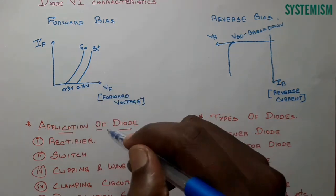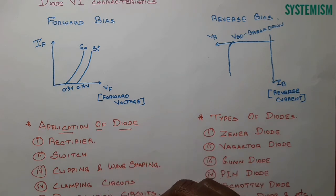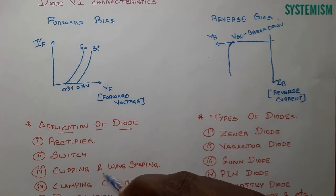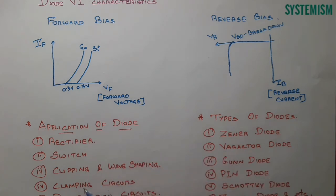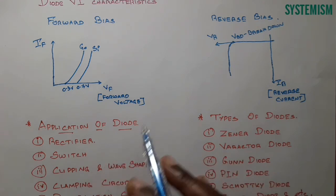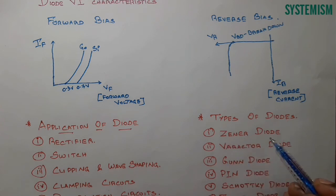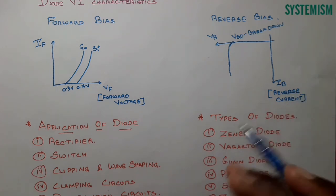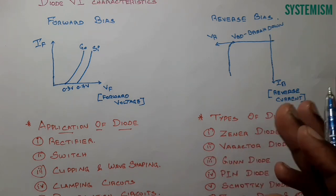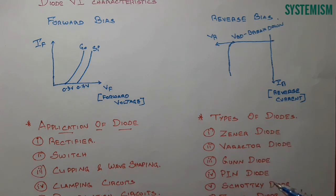Using this switching concept, the diode can be used as a switch. There are also other applications: clipping and wave shaping circuits, clamping circuits, and demodulation circuits — all of which we'll cover in further classes. The different types of diodes include Zener diode, Varactor diode, Gun diode, PIN diode, Schottky diode, Tunnel diode, and more. Thank you — kindly like, subscribe, and share with your friends.